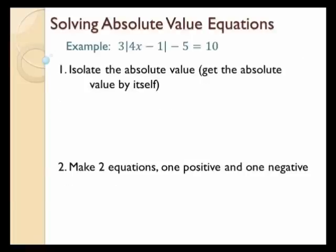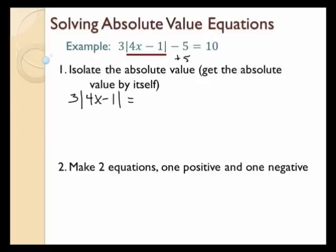So let's take this example and solve it. We have 3 times the absolute value of 4x minus 1, minus 5, equals 10. I want to isolate the absolute value first — isolate means I want to get it by itself. I need to get rid of the negative 5 and the 3. So the first thing I want to do is add 5 to both sides. I end up with 3 times the absolute value of 4x minus 1 equals 15.